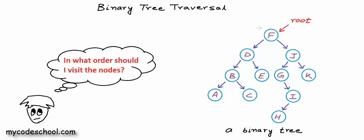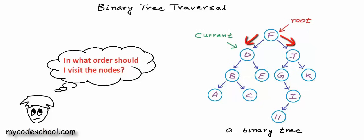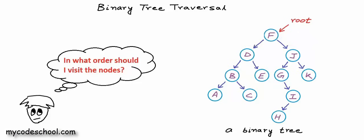In this binary tree, if we start with a pointer at the root node, then we have two possible directions. From F, we can either go left to D or we can go right to J. And of course, if we go in one direction, then we will somehow have to come back and go into the other direction later.